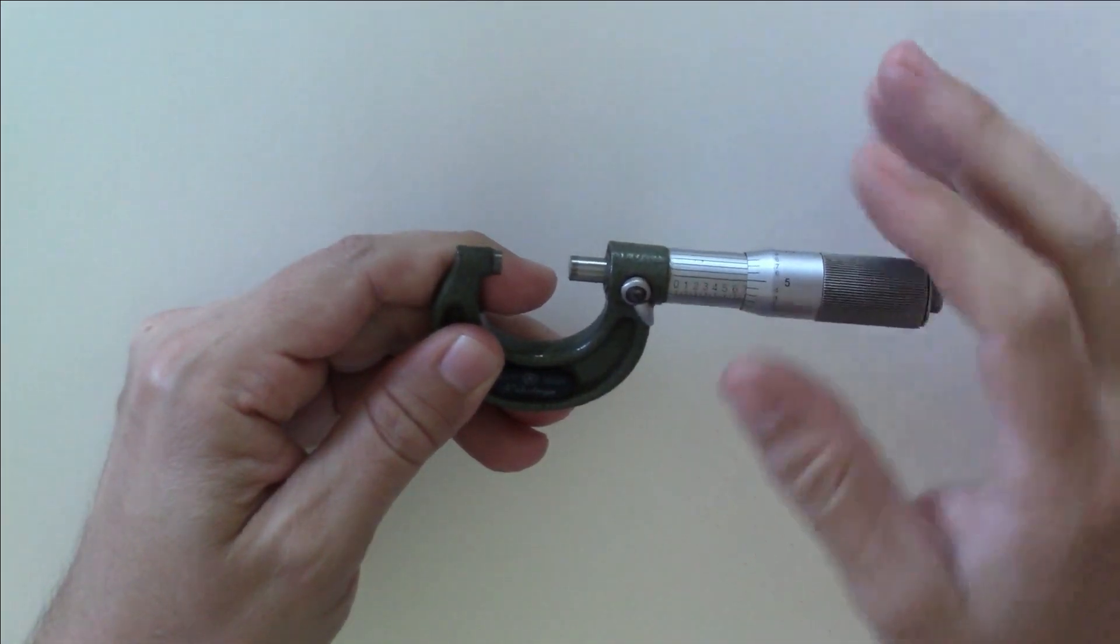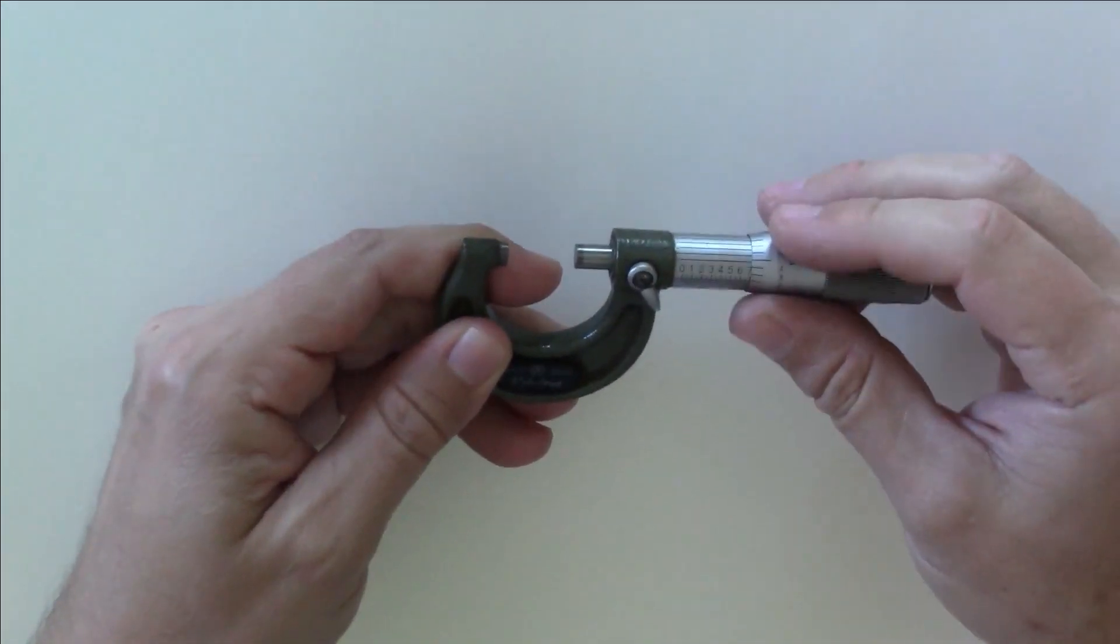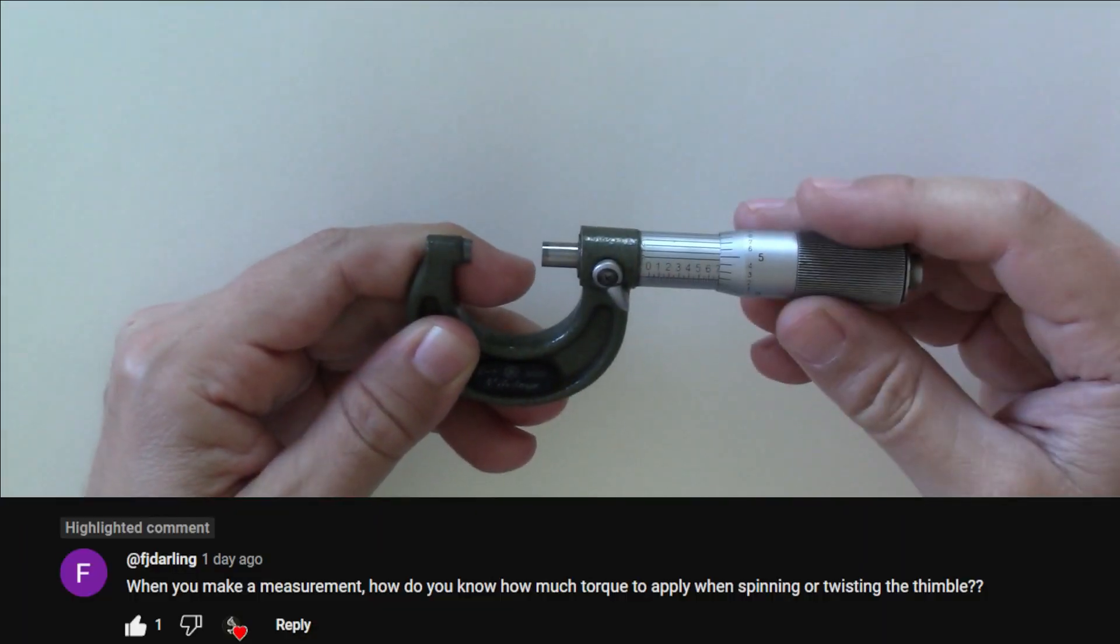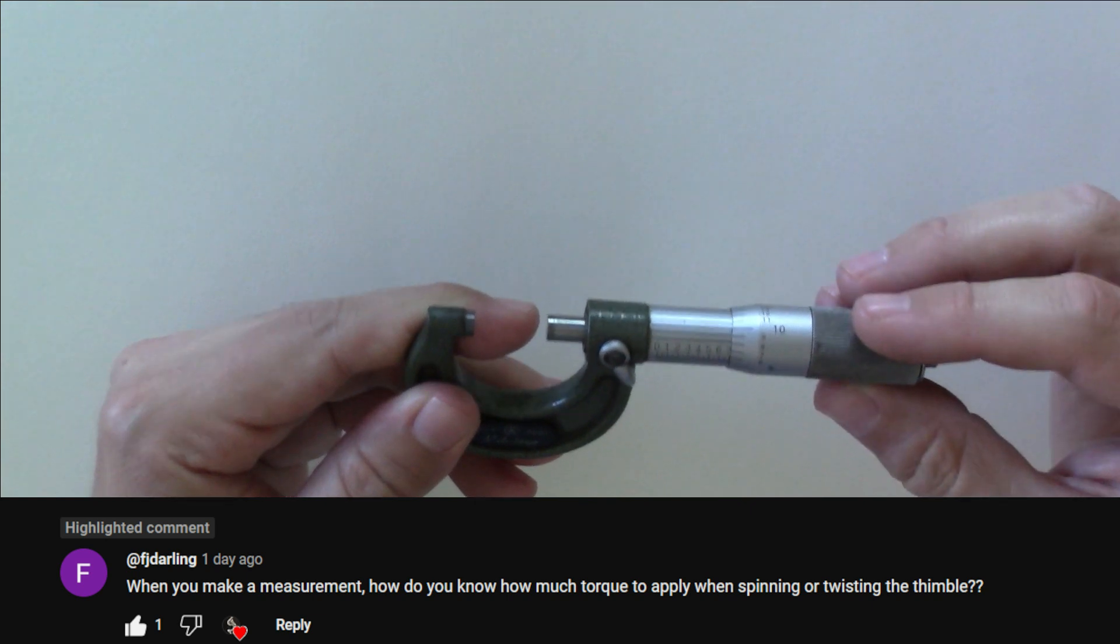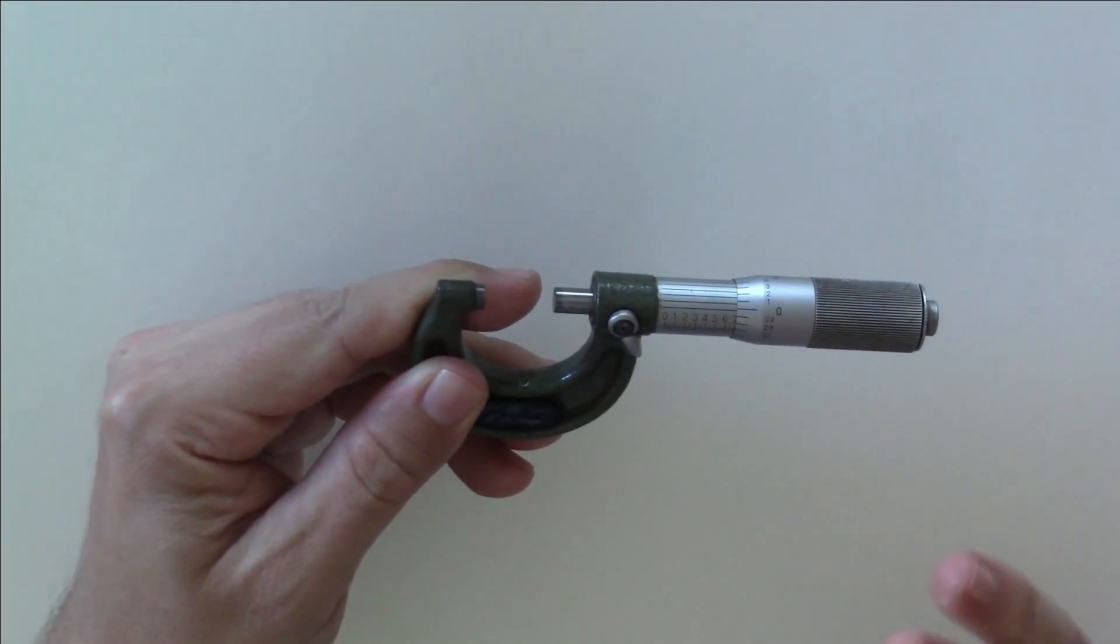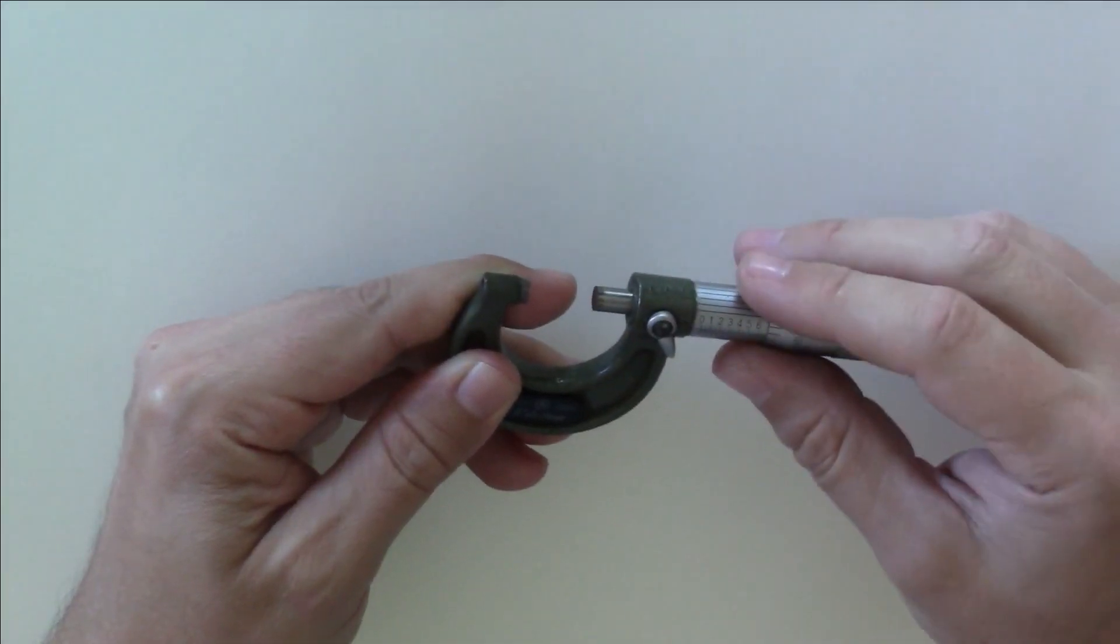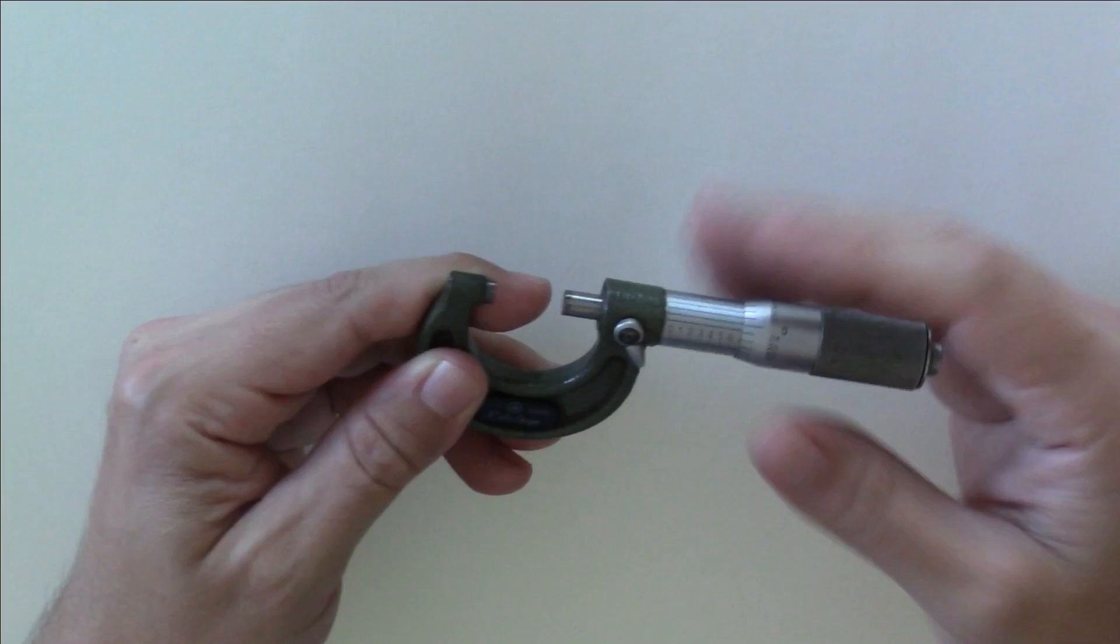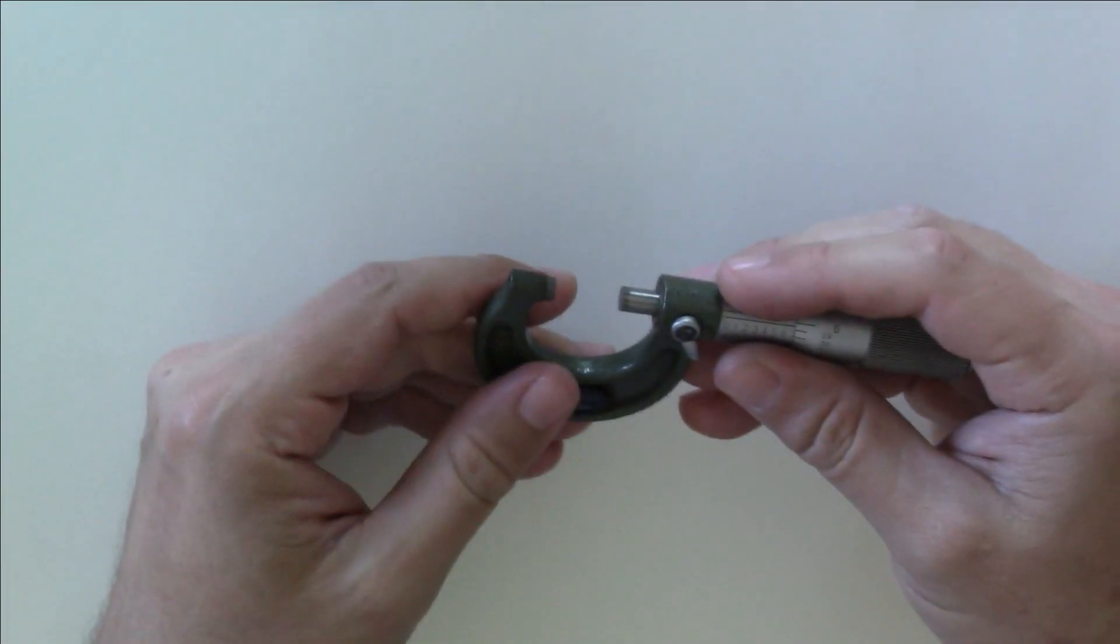Hi everyone, I recently had a comment on my how to read micrometers video from Frederick Darling asking, when you make a measurement, how do you know how much torque to apply when spinning or twisting the thimble? That is a really great question, and I just couldn't let the answer stay buried in the comments section of that video, so here it is in its own video.